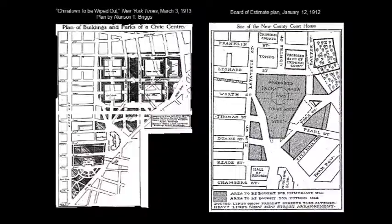Here are just two images, both circulating around 1912–1913, around the moment that the final decision is made about the site of Foley Square. The one on the right is quite provocative from the New York Times, and you can see on the left the provocative New York Times headline: 'Chinatown to be Wiped Out.'